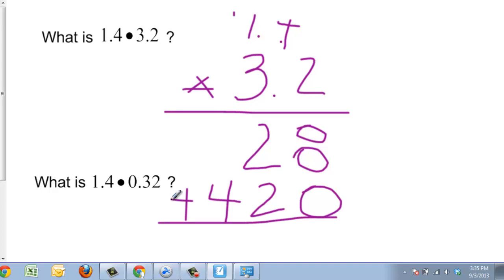I need to add these together. So I get 8, 2 plus 2 is 4, and 4. So for the first problem there, 1.4 times 3.2, I notice that one number behind the decimal point and another number behind the decimal point. So my answer needs to have two numbers after it.